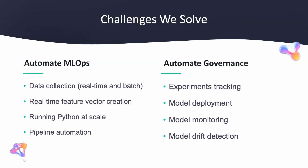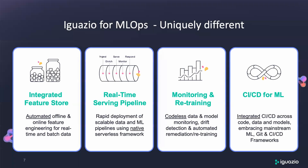Our customers also say that we are really good at solving these problems, whether it's automating MLOps processes or automating the governance that goes along with it. So if your team is struggling with any or all of these issues, I'd recommend talking to us. Some of the things you may not find anywhere else include our integrated feature store for online and offline ingestion and data transformations, real-time serving pipelines for complex data ingestion and model inferencing flows, monitoring and retraining of models that you have in production, as well as CI/CD integration for tools like GitHub, GitLab, Jenkins, as well as your existing infrastructure.